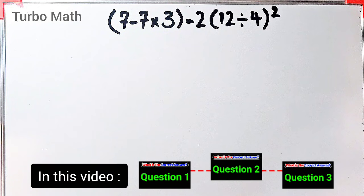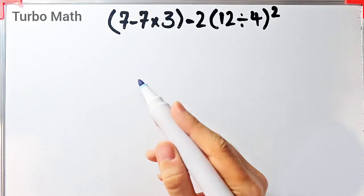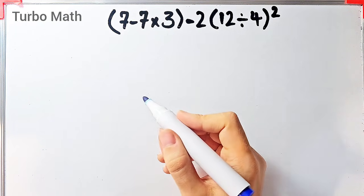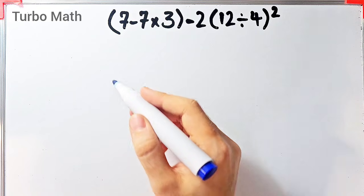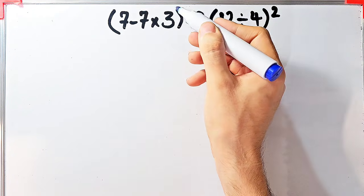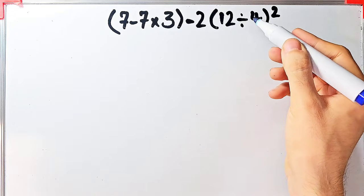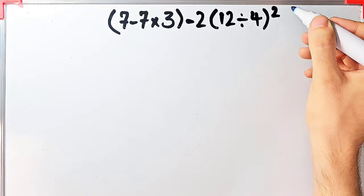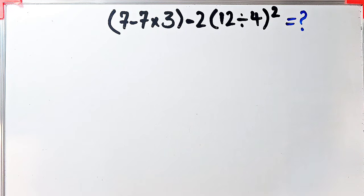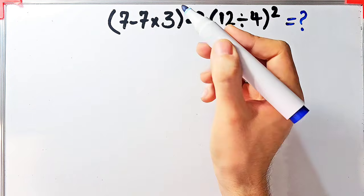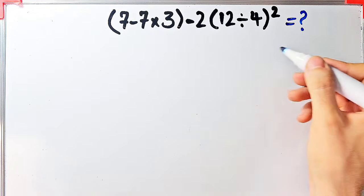Hi friends, welcome to Turbo Mass channel. In this video we are going to solve three questions about the PEMDAS rule. The first question is: open parenthesis seven minus seven times three close parenthesis, minus two times open parenthesis twelve divided by four close parenthesis, then all of them to the power of two. What is the answer of this question? In this question we have parenthesis, subtraction, multiplication, division, and exponent to solve.